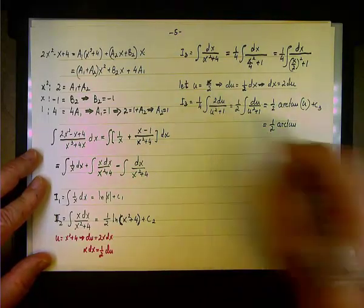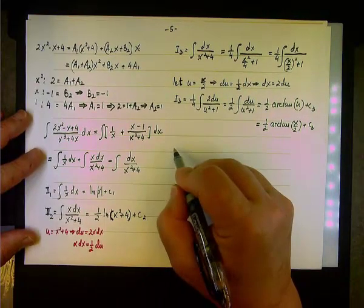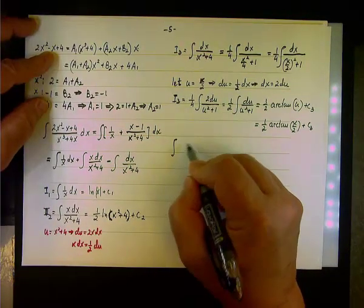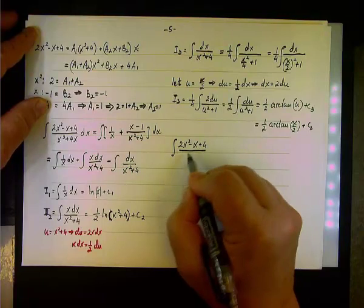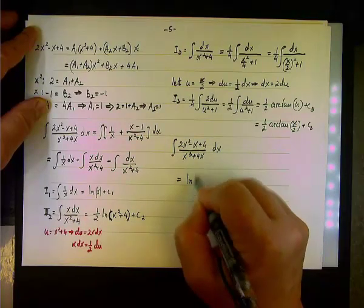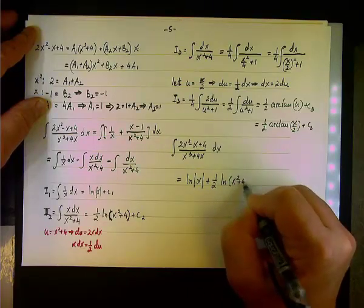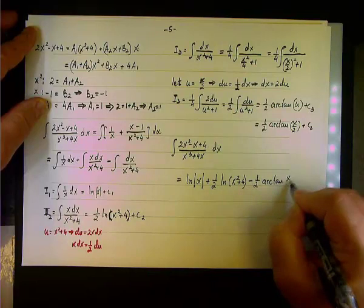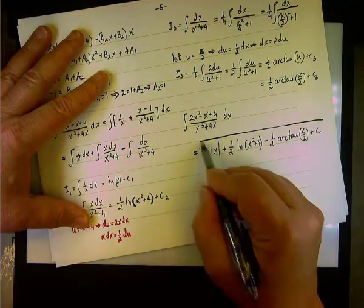Since u = x/2, we now have all the components and can put it together. The integral of (2x² − x + 4)/(x³ + 4x) dx equals ln|x| + ½ ln(x² + 4) − ½ arctan(x/2) + C, combining the constants C1, C2, and C3 into a single constant.